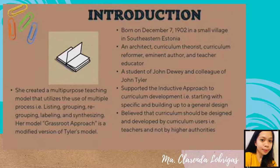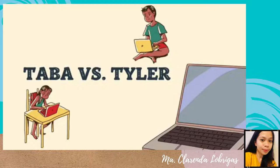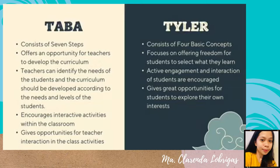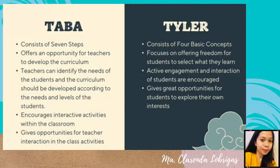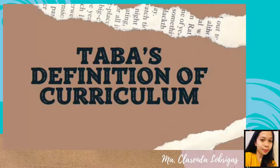Her model's grassroots approach is a modified version of Tyler's model. The Taba model and Tyler model are two curriculum development models. The key difference between the two is that the Tyler model consists of four basic concepts, whereas the Taba model consists of seven steps. The Tyler model basically focuses on offering freedom for students to select what they learn, whereas the Taba model offers the opportunity for teachers to develop the curriculum.